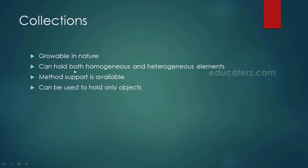Collections can be used to hold only objects. Arrays can store primitive data types and objects, whereas collections can store only objects. When we store a primitive value inside a collection, it internally gets converted into an object.